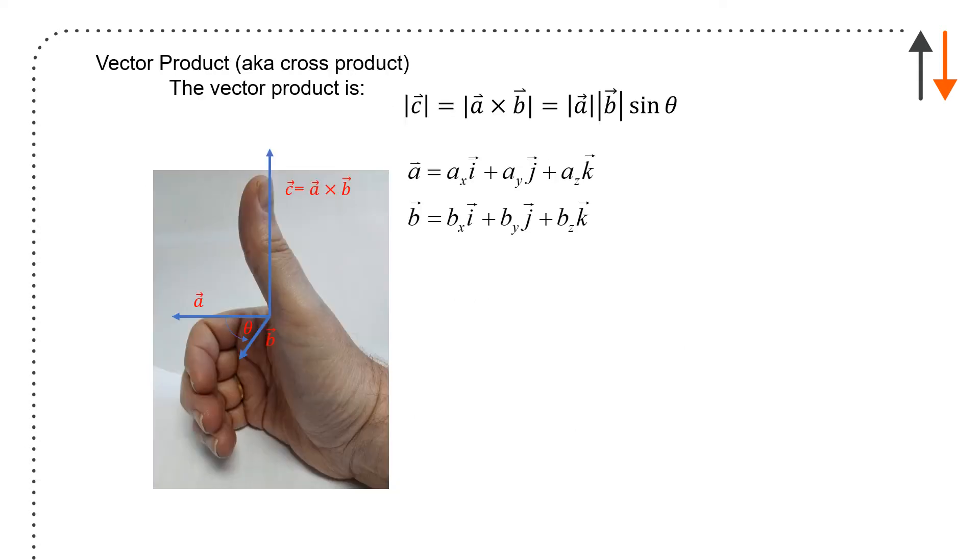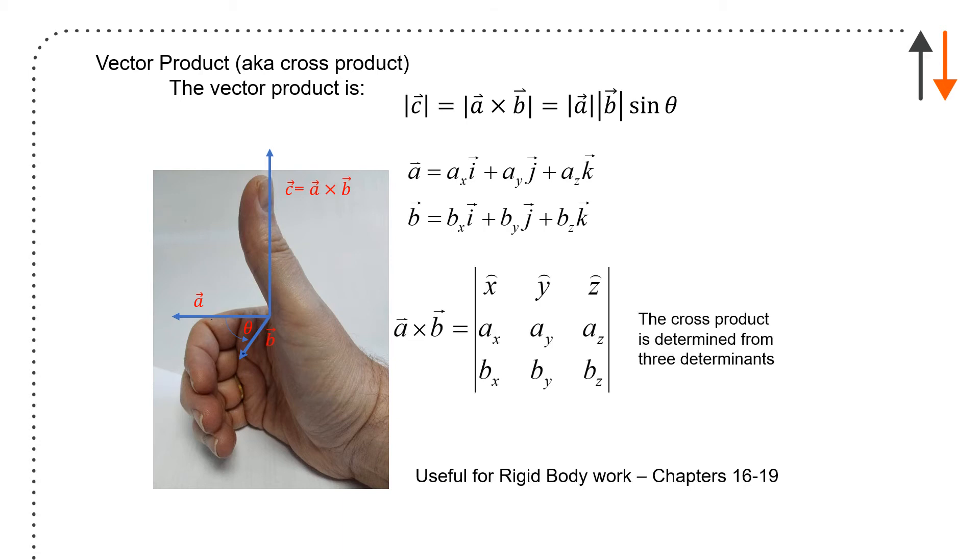So this is a very well-done photograph of my thumb showing you a vector product, which is the cross product. So if I wanted to know A cross with B, so from A to B, I have to use my right hand, and I curl my fingers in the direction of the multiplication. So from A to B. And if I do that, I get a resultant vector, which is C, which is A cross with B. So this is a two-dimensional plane, and this is going to exist normal to the plane. So C is normal to this.